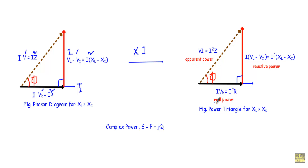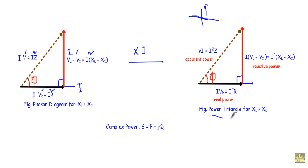Apparent power is the sum of real power and reactive power. With the real and imaginary axes, reactive power goes in the positive imaginary direction, so real power P plus reactive power jQ forms our complex power S. We get the power triangle by multiplying each side of the voltage phasor by current I.